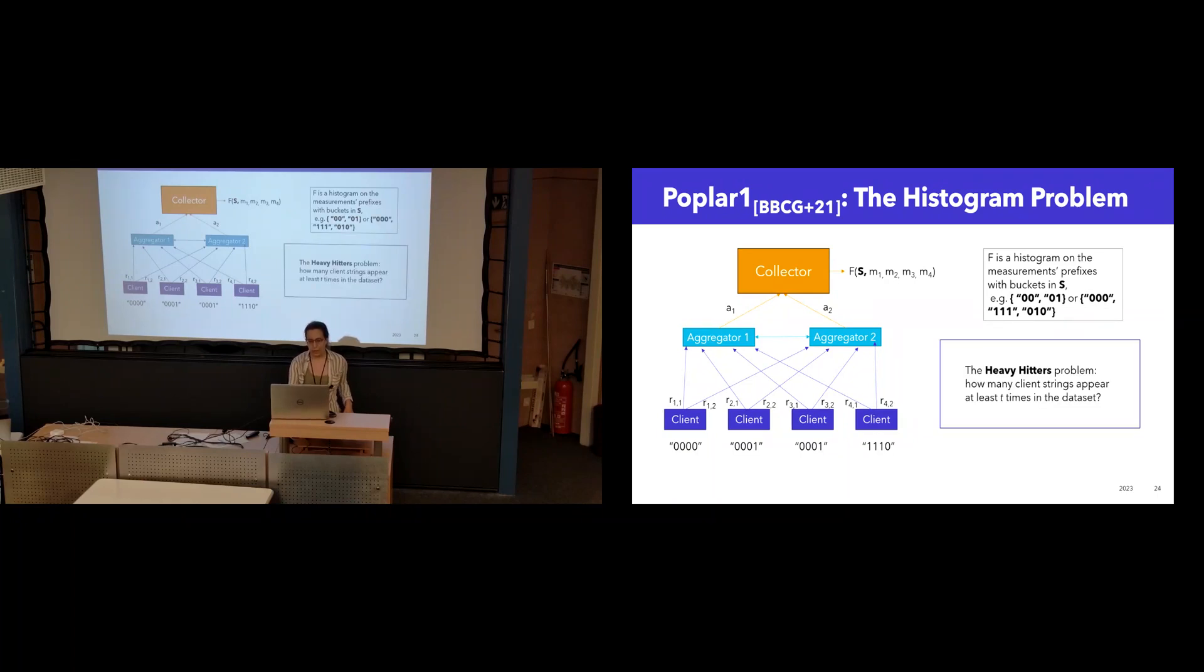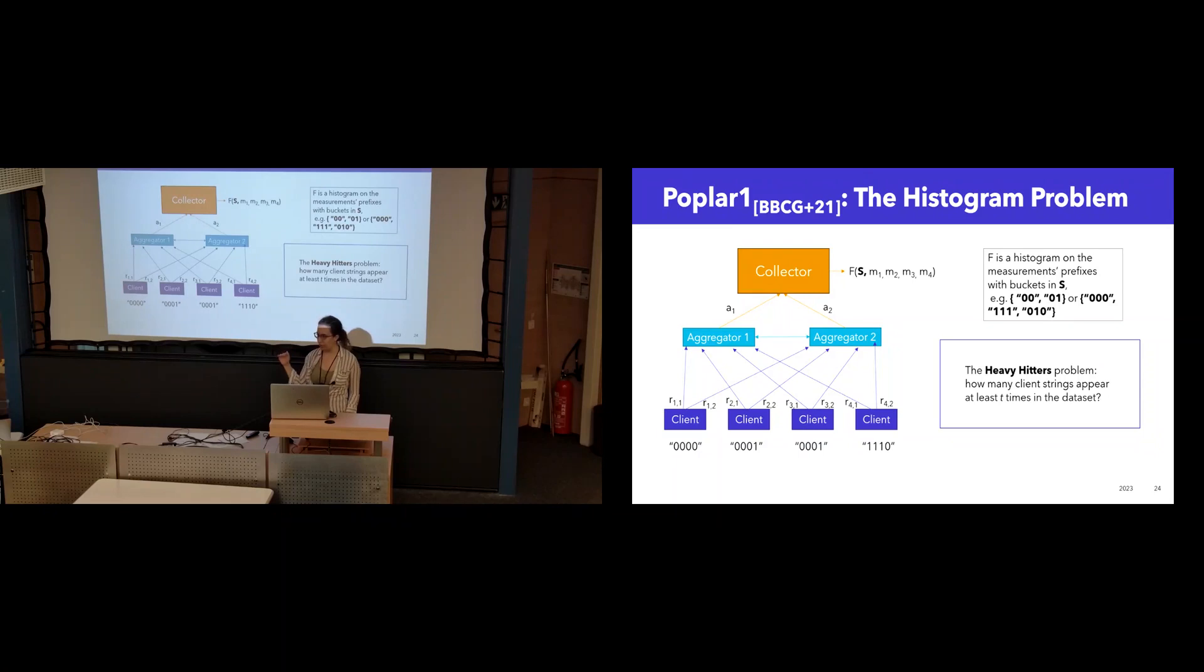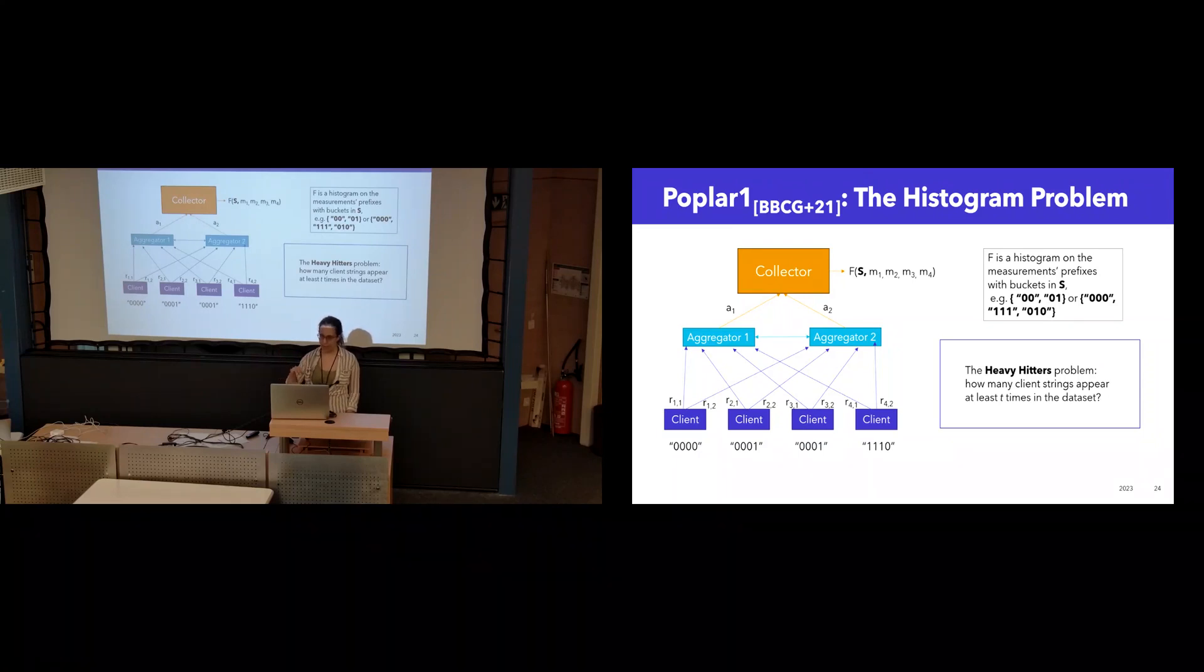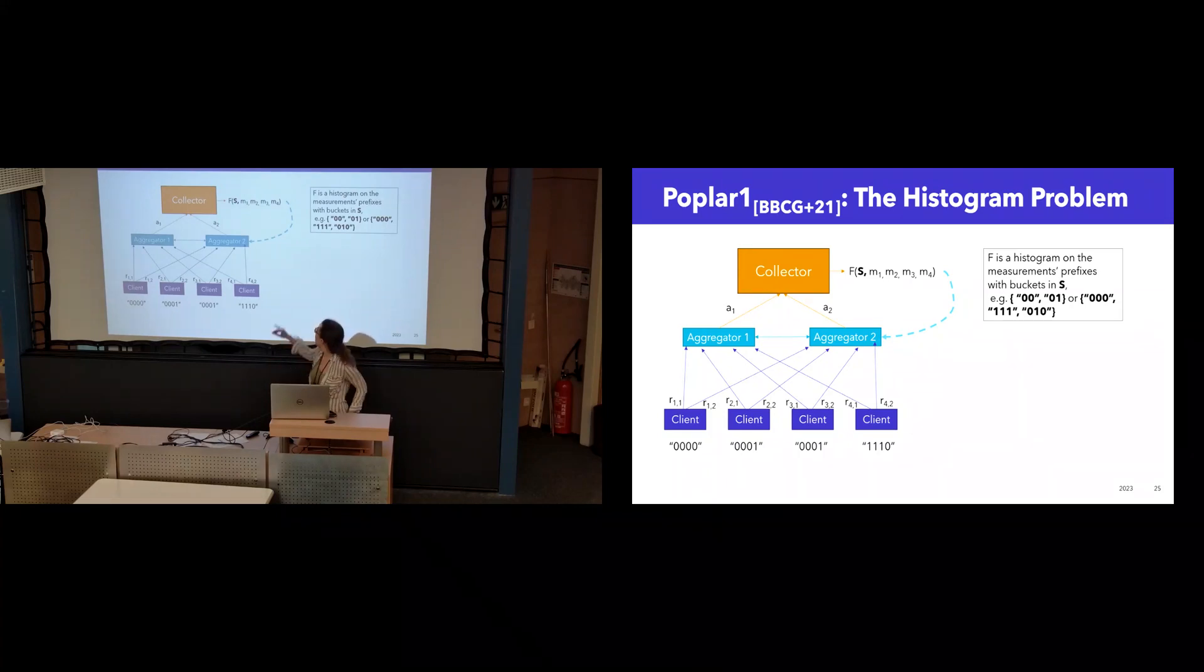So Poplar1 is actually a subroutine of the Poplar protocol, which is designed to solve the heavy hitters problem, asking how many client bit strings appear at least a threshold number of times in the dataset without learning anything about the bit strings that appear less than that threshold number of times.